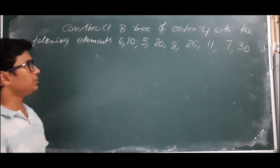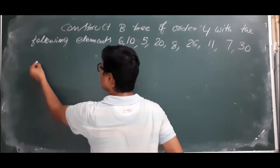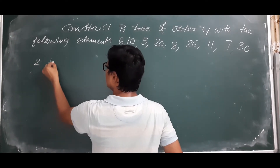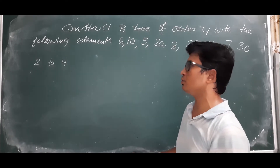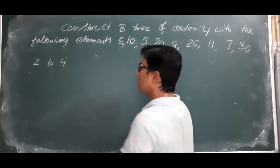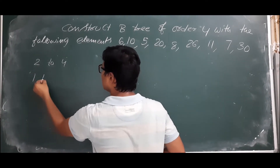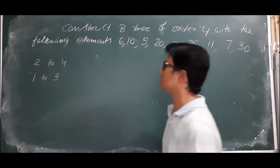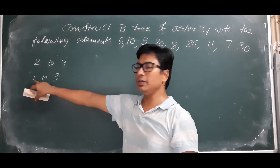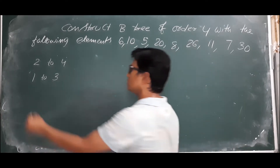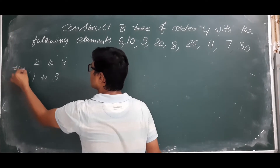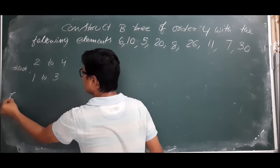Now let me start the procedure. If the order is equal to 4, the root node can have 2 to 4 children. The root node can have a minimum of 1 key and a maximum of 3 keys. This is about the root node.